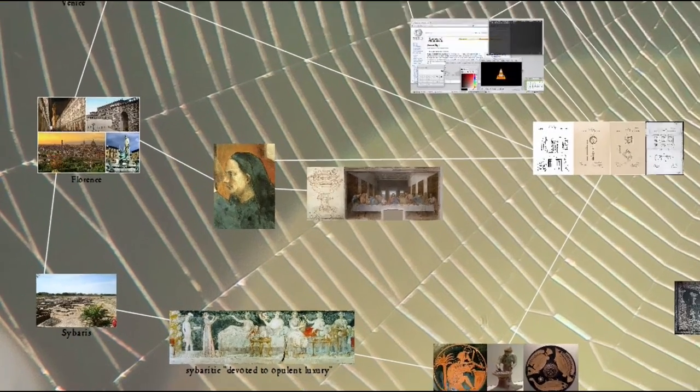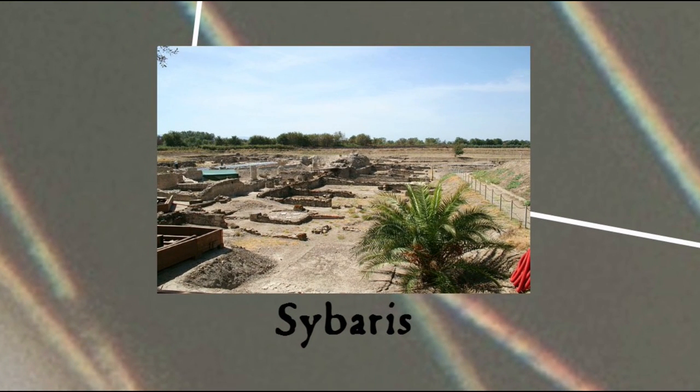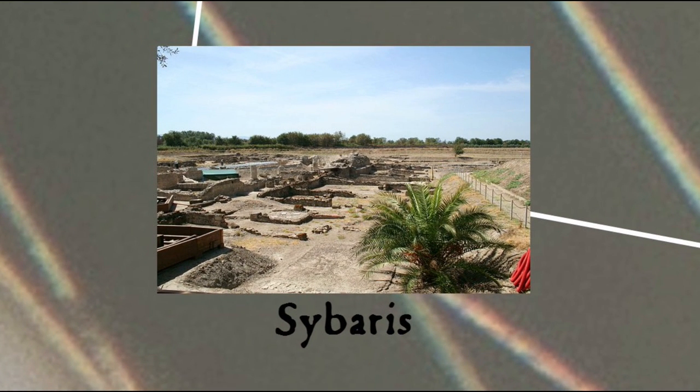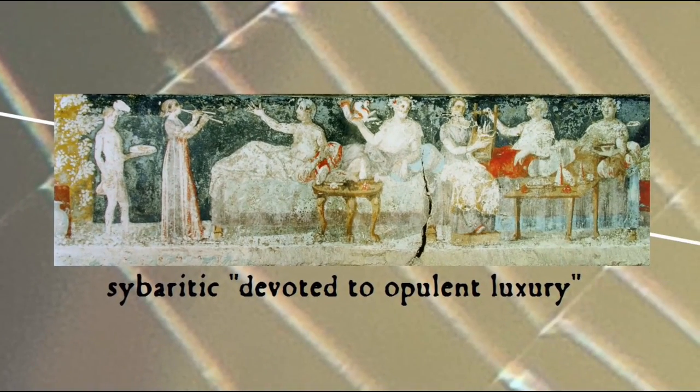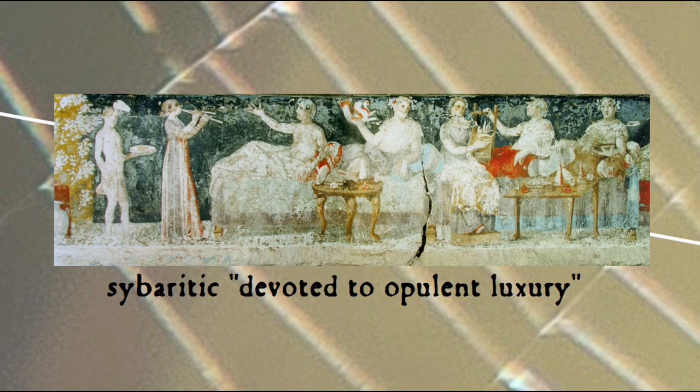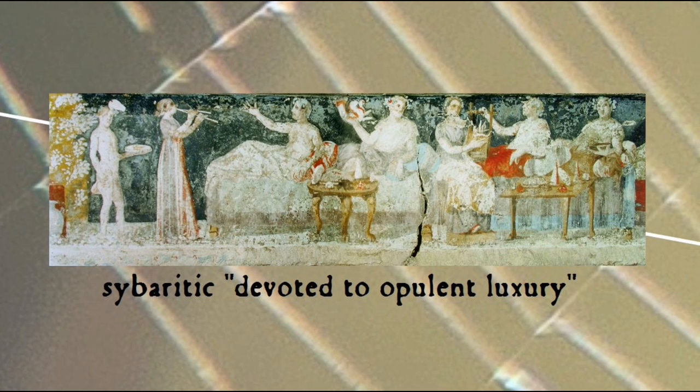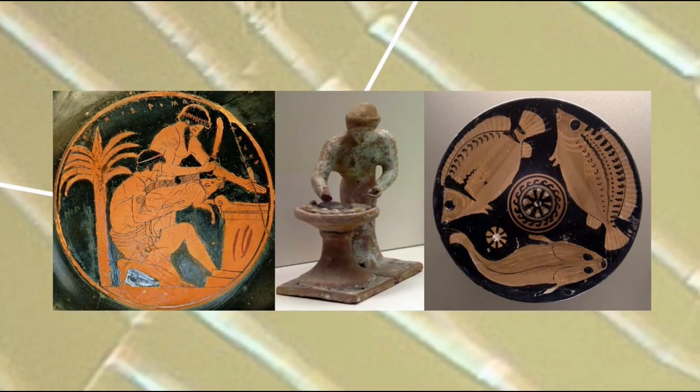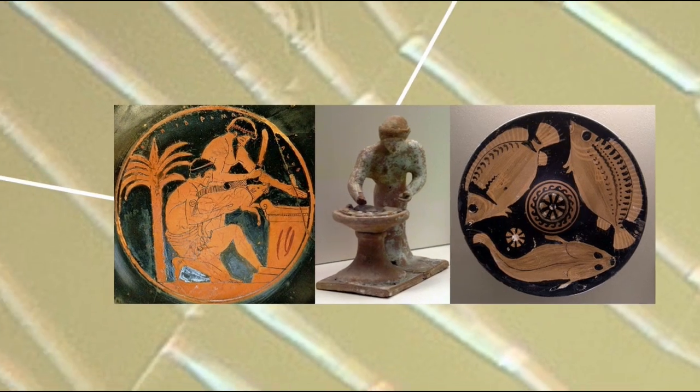The ancient Greek colony Sybaris, located in what is now Italy, was so financially successful that the citizens became known for their feasting and hedonism, so much so that even today the word Sybaritic means devoted to opulent luxury. Perhaps not surprising, then, that cooks in Sybaris were apparently granted exclusive rights to any culinary recipe they invented for a period of one year, at least according to the Greek writer Athenaias. Even if this report isn't true, that the idea of intellectual property could even be conceived of in the ancient world is an interesting milestone.